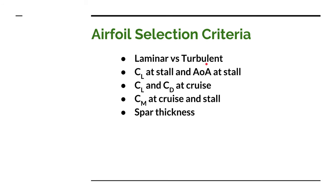One criterion is laminar versus turbulent shape of the airfoil — whether the boundary layer going over the airfoil is laminar, which gives low drag, or turbulent, which helps keep the boundary layer attached to higher angles of attack but has a little more drag. We can also look at the coefficient of lift at stall and the angle of attack at stall. We generally want a higher coefficient of lift at stall for ultralights. We can also look at the coefficient of lift versus coefficient of drag — the lift-drag ratio — and we want that higher.